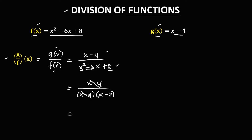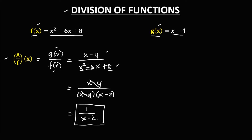After canceling, the numerator becomes 1, and the denominator is x minus 2. So the quotient of g(x) over f(x) is 1 over (x minus 2).